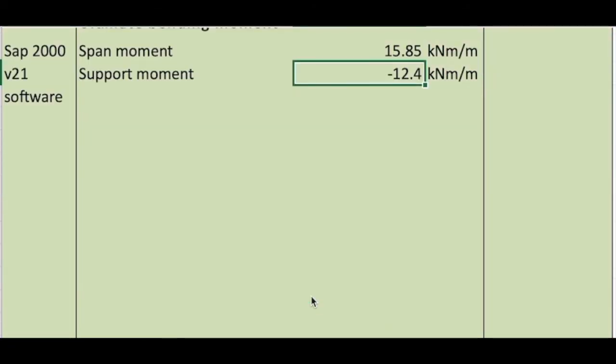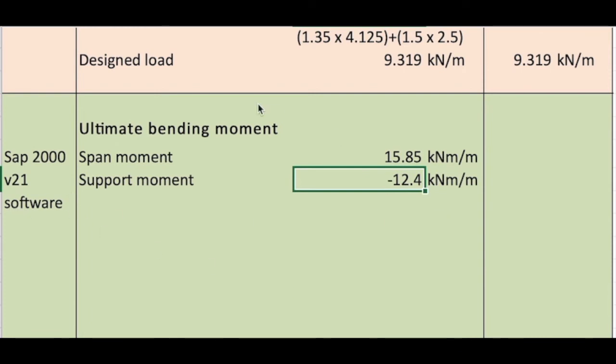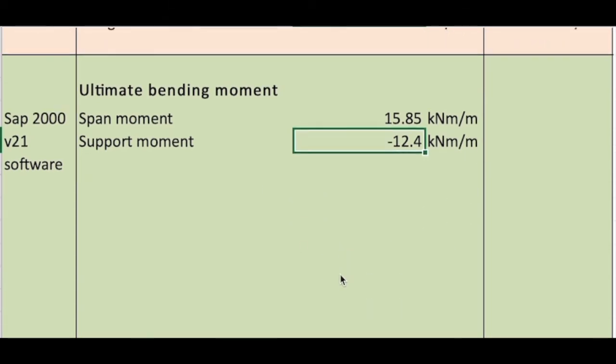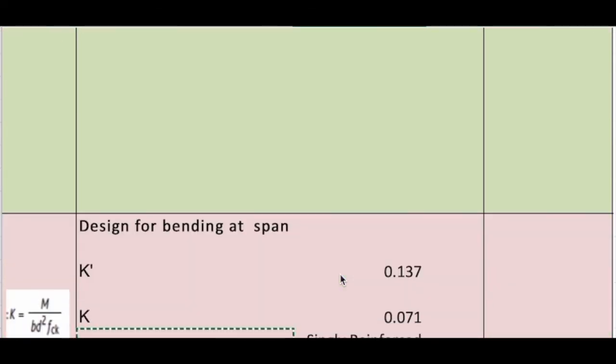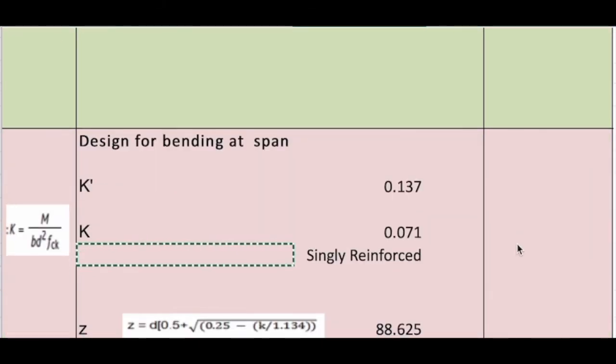Ultimate bending moment. I use the SAP 2000 software to find the span moment 15.85 kN·m, support moment 12.4 kN·m. Then we have to do the flexure design, actual design. Design for bending at the span.